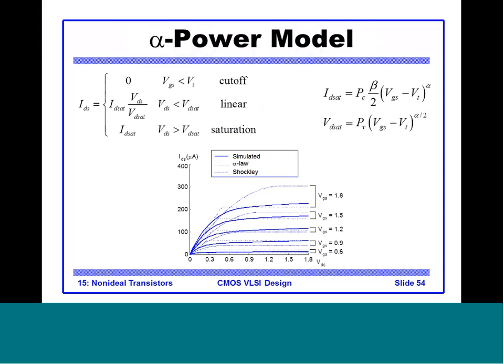The Shockley model is a second-order (α = 2) model. The alpha-power model comes much closer to SPICE simulations than Shockley. The equations for the alpha-power model define ID_sat and VD_sat accordingly.